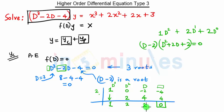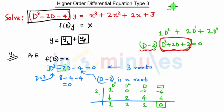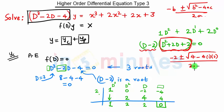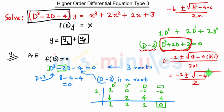So one root is D = 2 and the other two roots come from the quadratic D² + 2D + 2 = 0. Applying the quadratic formula: D = (-b ± √(b² - 4ac)) / 2a, with b = 2, a = 1, c = 2, we get D = (-2 ± √(4 - 8)) / 2 = (-2 ± √(-4)) / 2.